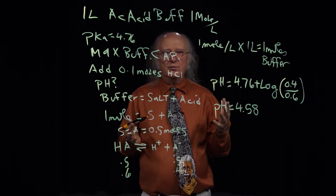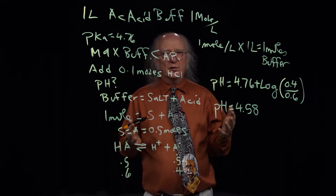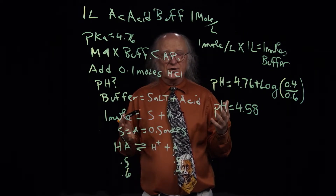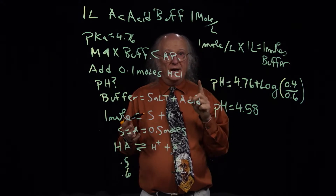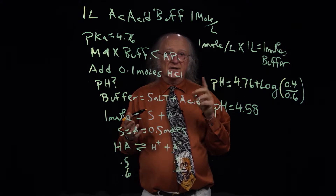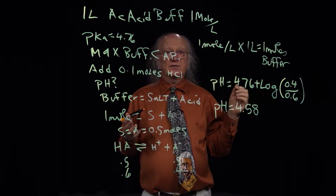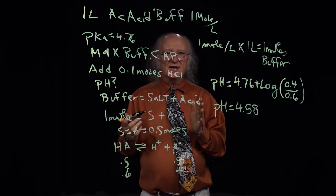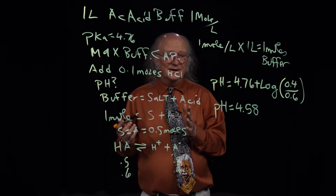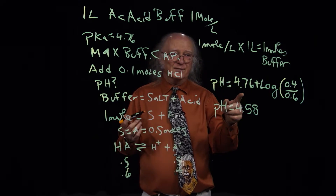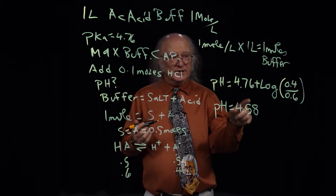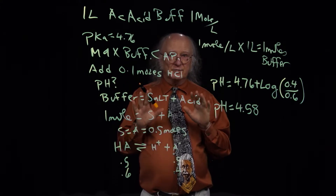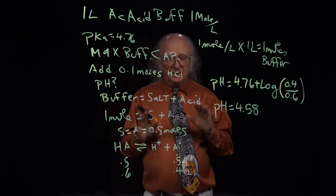If I had added 0.1 moles of protons to pure water, it would have created a solution with a pH of 1. Starting from pH 7, that would be 6 pH units of change with no buffer. In the presence of this buffer, the pH only changed by 0.18 units — the buffer is resisting changes in pH.